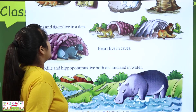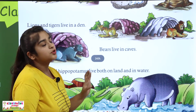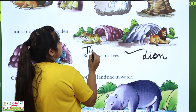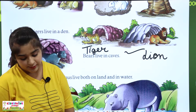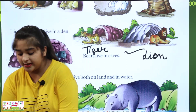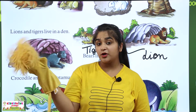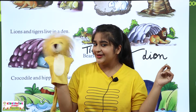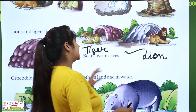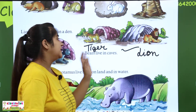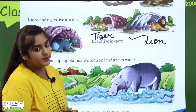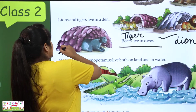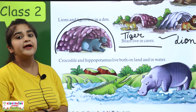Next, lions and tigers live in a den. This is a lion and this is a tiger — they live in the den. The lion is yellow. The bear lives in a cave — the bear's home is called a cave.